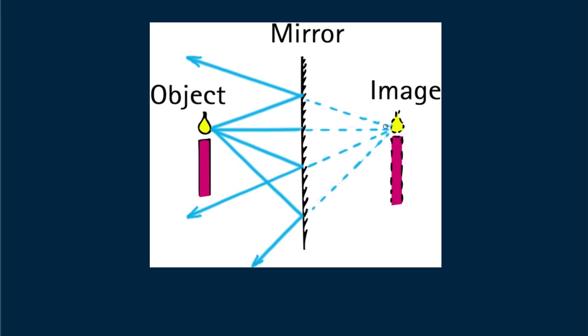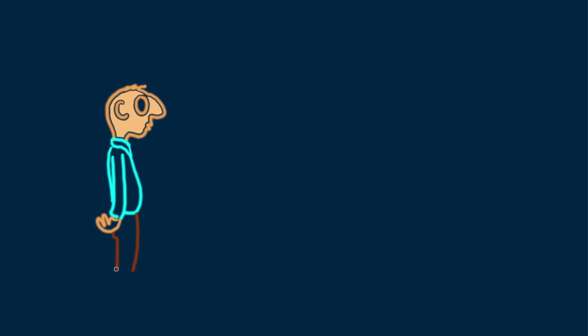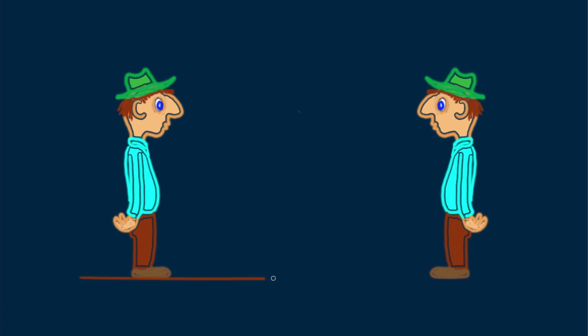The image is as far behind the mirror as the object is in front of the mirror. An image and object have the same size. Consider Blinky Bill, who wishes to view his full-length image in a mirror. We'll see that his distance from the mirror is the same as the distance of his image, which to him looks like his twin. Both Blinky Bill and his twin are of the same size, with a mirror directly between them.